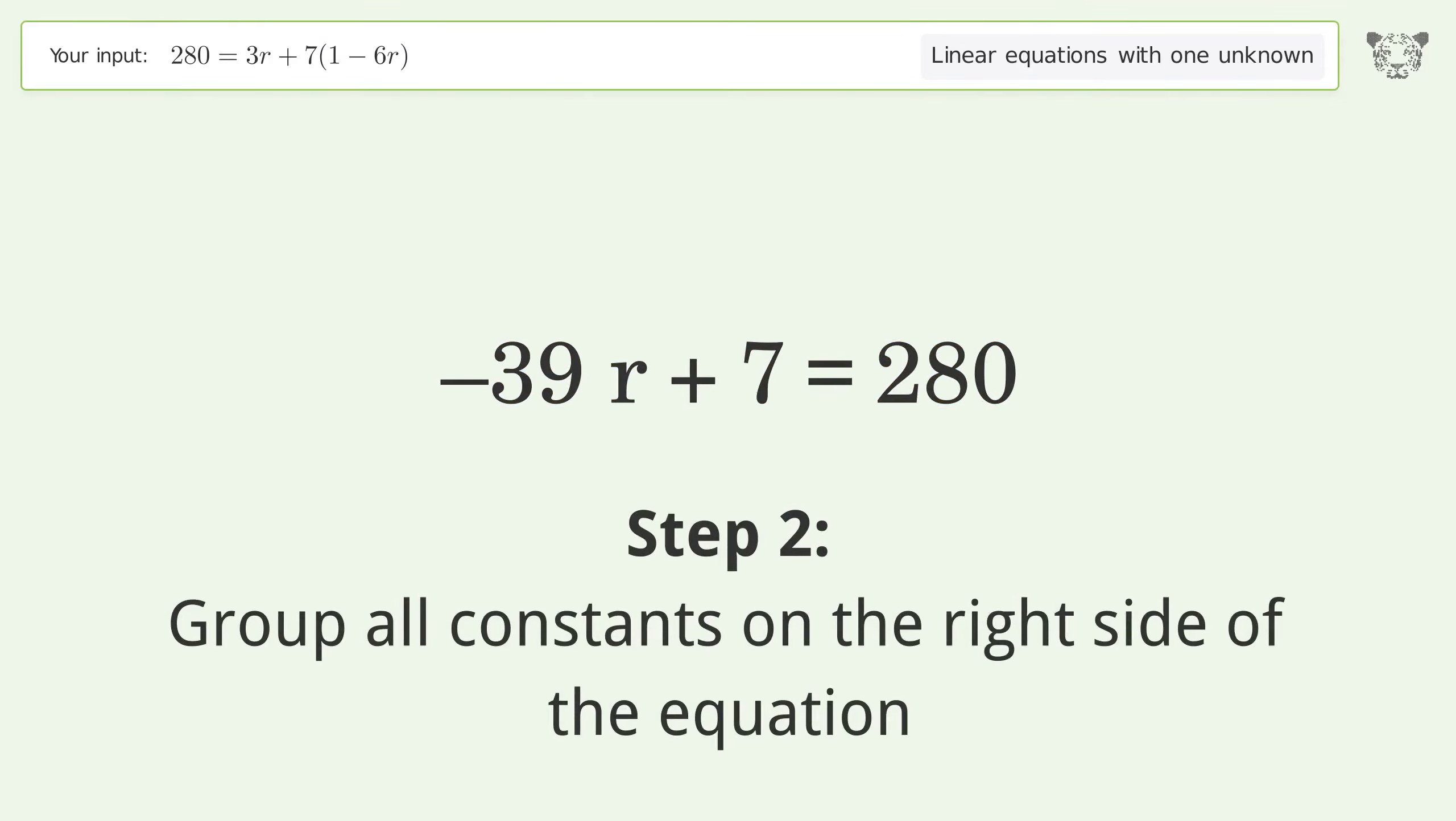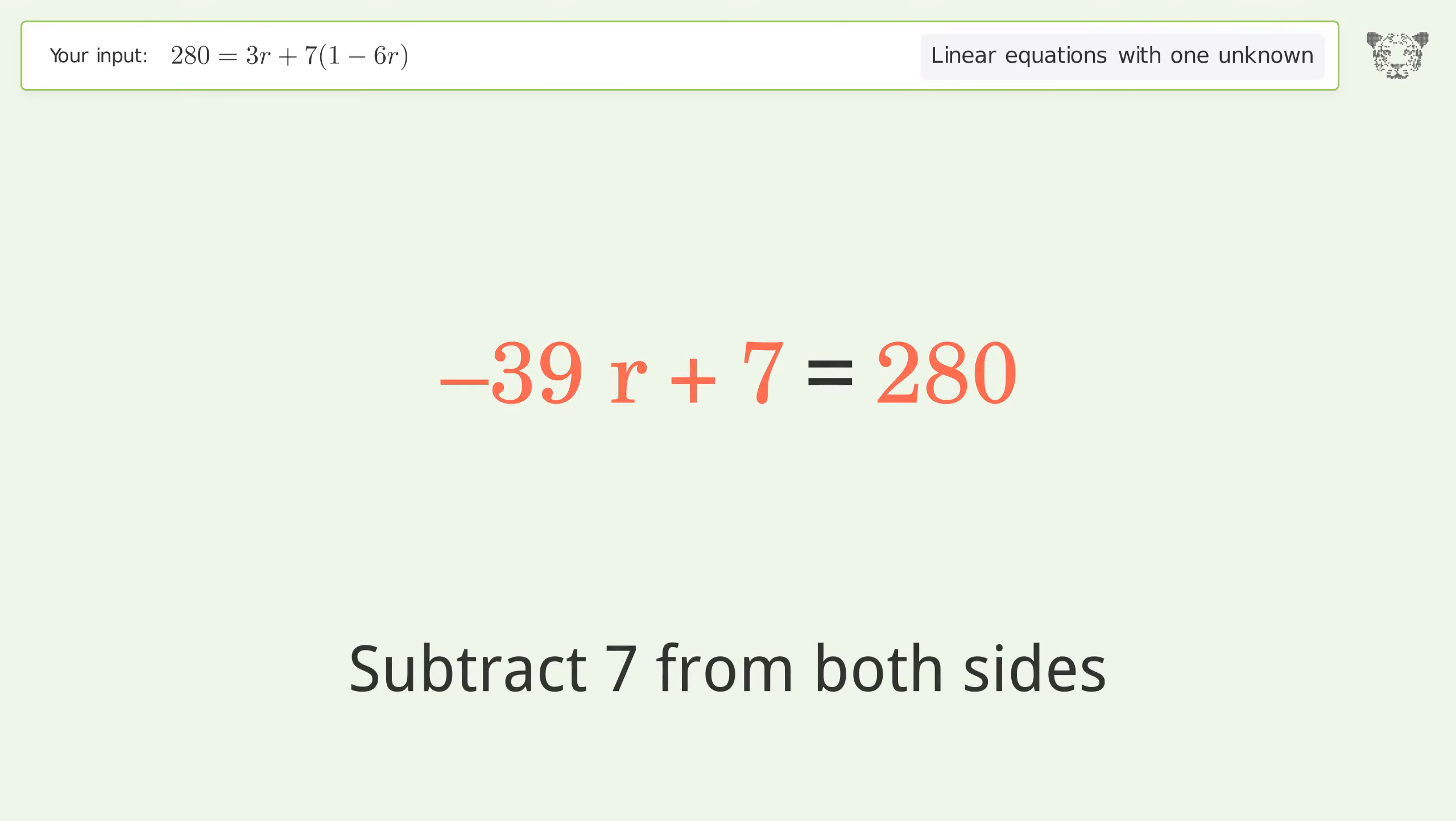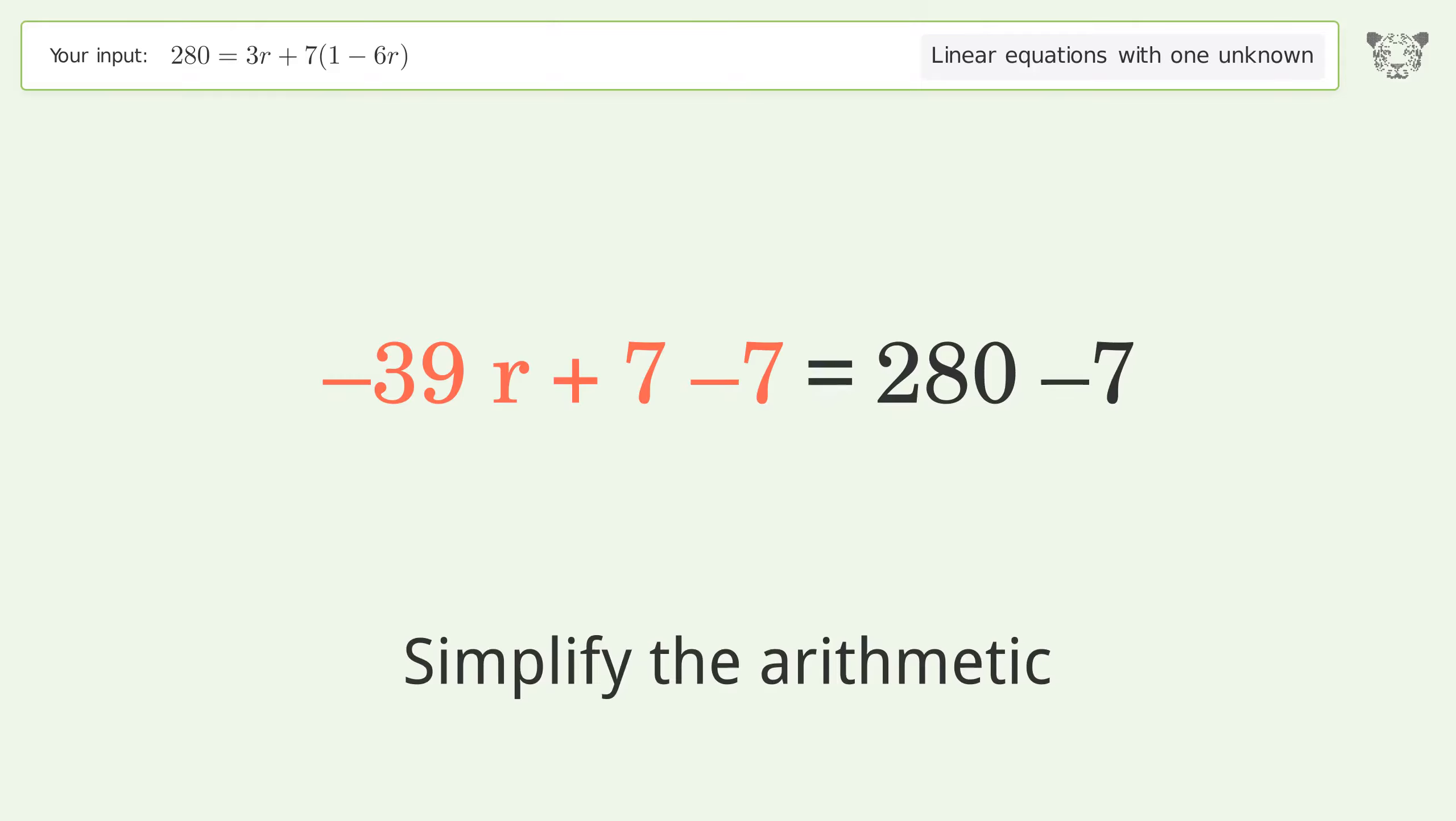Group all constants on the right side of the equation. Subtract 7 from both sides. Simplify the arithmetic.